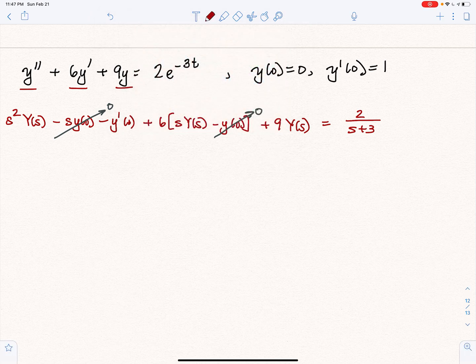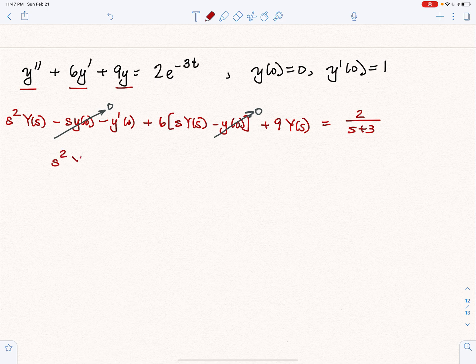Now I'm going to rewrite all of the Y of S terms together. So we have S squared Y of S, we have 6S Y of S, and we have 9 Y of S.